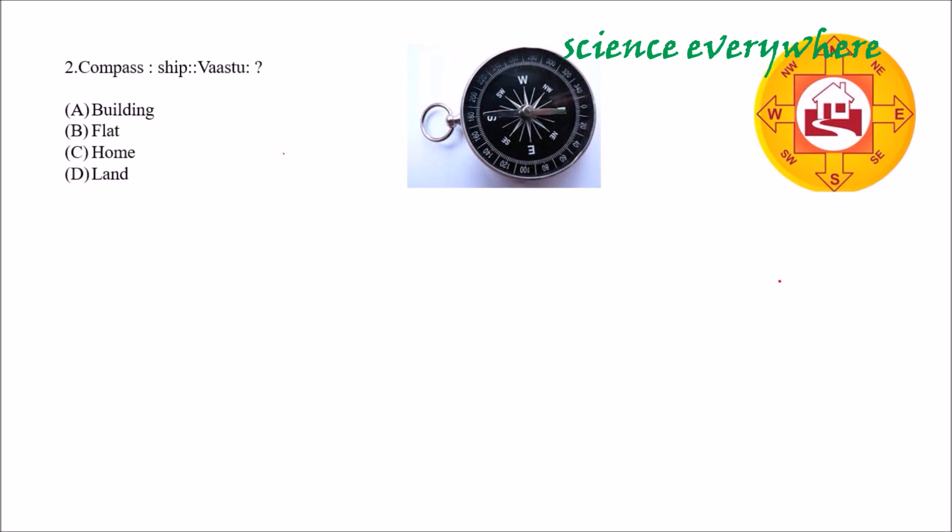So compass is related with ship and vastu will be related with what among these four options. This is a compass and this is a vastu. You know compass is used to know the direction - north, east, south, anything. And while you will be in the ship, you will use this compass to know the direction. So, means to know the direction, the source is compass and similarly vastu is a source for what? Vastu is a source for knowing while constructing building, our building should face which side, face of the building should be at what side or what should, doors should be at what side.